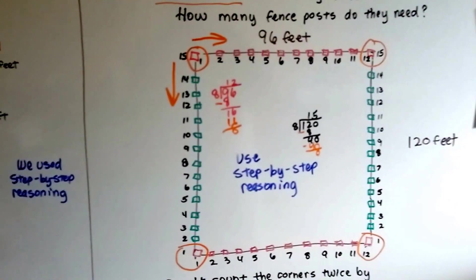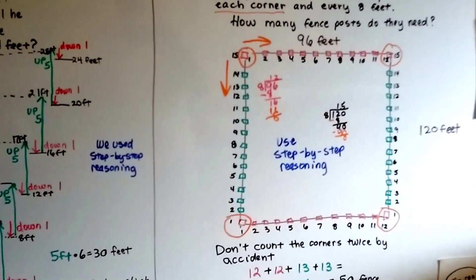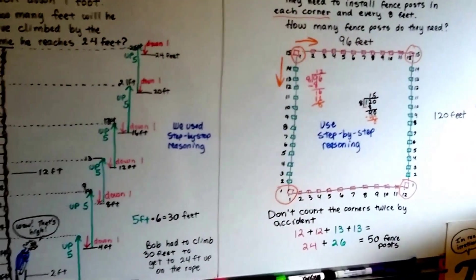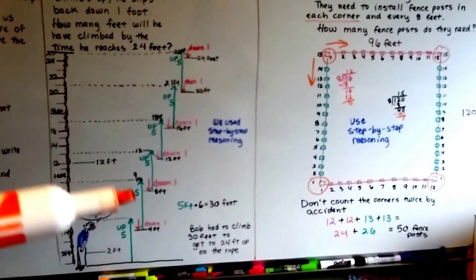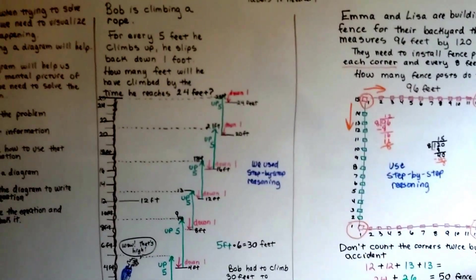So, drawing a diagram can help figure something out and see if it makes sense and see how we did step-by-step reasoning. And even this one, we did step-by-step reasoning to figure it out. So, that's strategy and drawing a diagram.